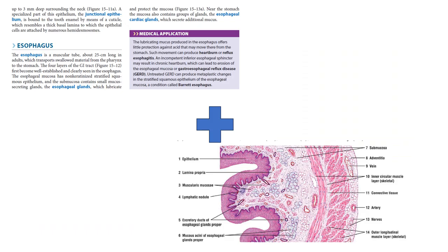Sa histology — halimbawa, tingnan nyo yung esophagus, four layers of the GI tract. Ginawa ko, kinorelate ko, and then titignan nyo sa slide. Sa histology, ang pinaka-first step talaga, the best way, the game changer: identify the organ. Laging identify the organ first. Kasi pagdating na kayo sa side question, pag na-identify nyo yung organ, napakalaking big game changer yan — at least, ma-apply nyo. Anong alam ninyo sa organ na yun?